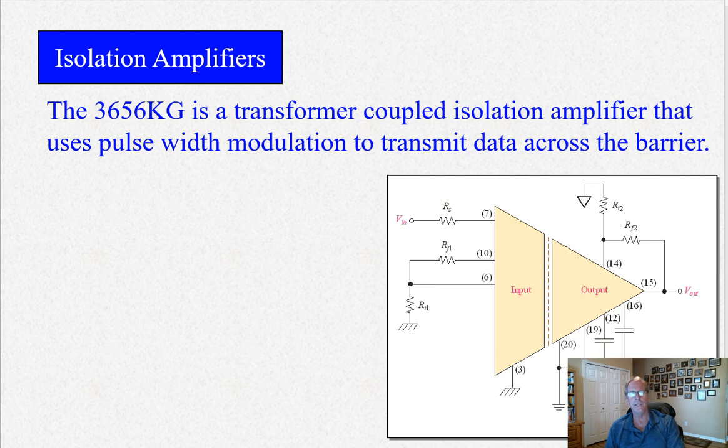There's another one that they present here, the 3656KG. And instead of using a capacitor coupling, we use transformer coupled isolation. So right in here is a transformer. A transformer, there is no real connection between the input and output other than the magnetic field between the coils. So that serves the purpose of the galvanic isolation. It works the same way. You can use FM or pulse width modulation on the input modulation and then demodulate that. There's one other kind of isolation amplifier method. We've looked at capacitive coupling. We've looked at transformer coupling.